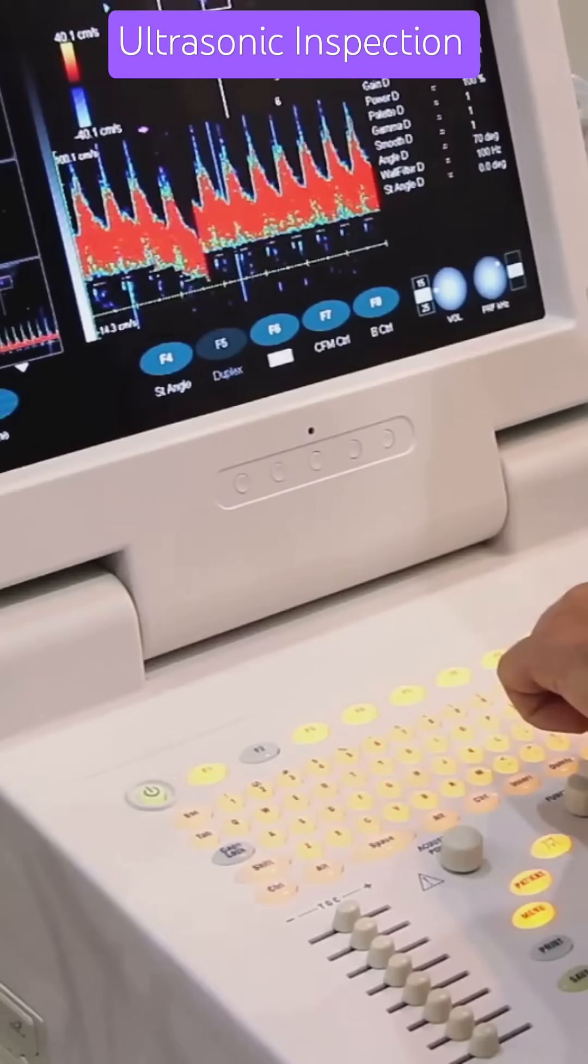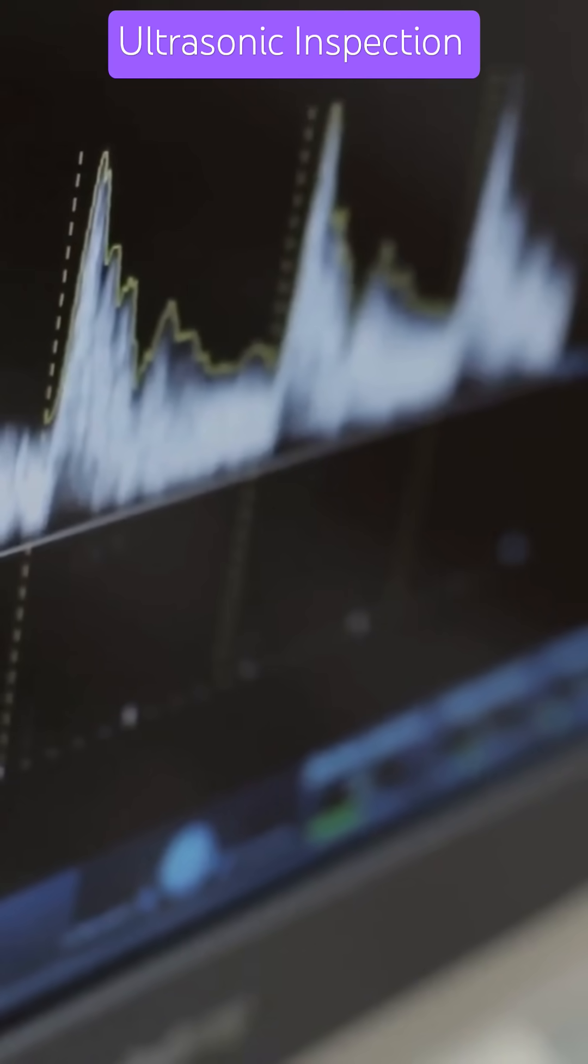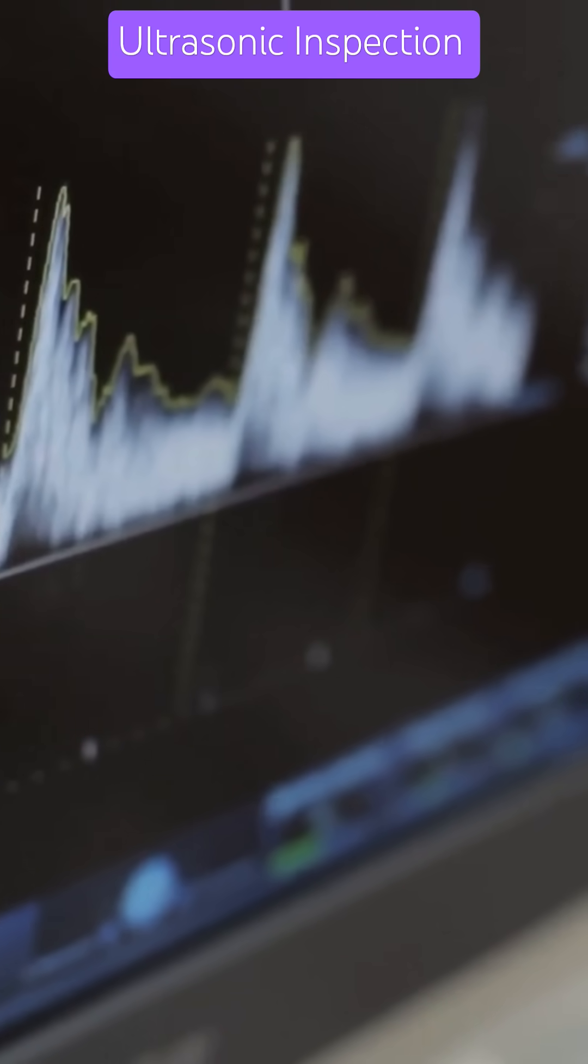A probe sends sound waves into the component. If there is a flaw inside, the wave bounces back differently, detected on a screen as a signal spike or echo delay.